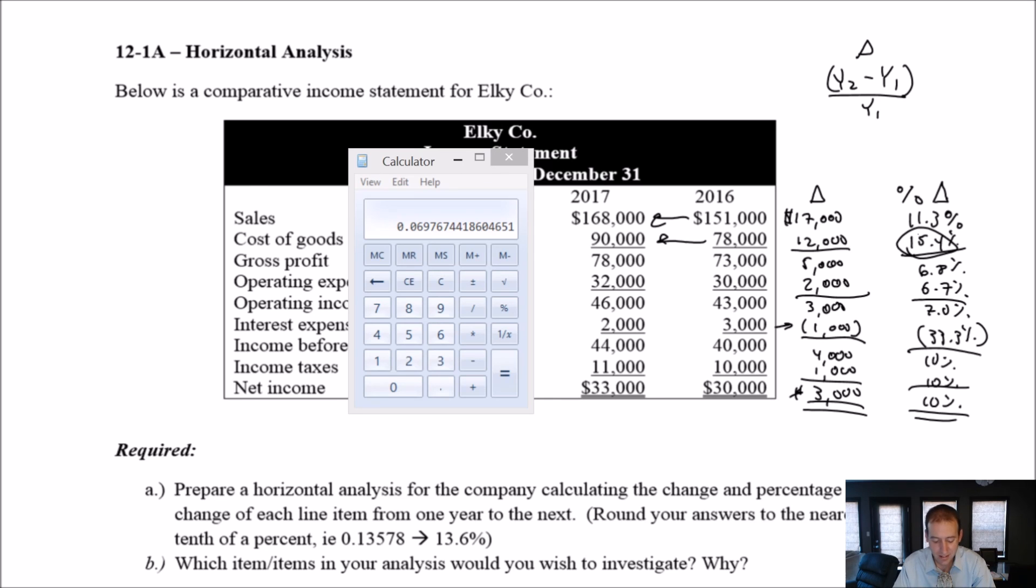We expect sales, cost of goods sold, gross profit, and operating expenses all to kind of move together. And so sales increasing by 11 and cost of goods sold increasing by 15 is not hugely different, but it would be the one I'd investigate if I were running this company. Okay, that's it for our first horizontal analysis. Stay tuned for the next one.